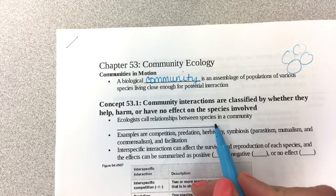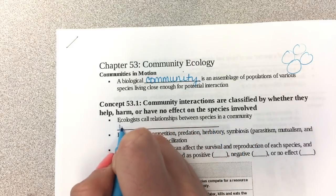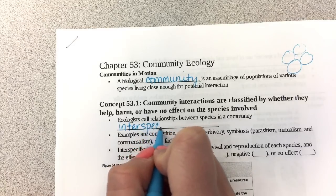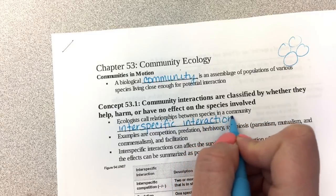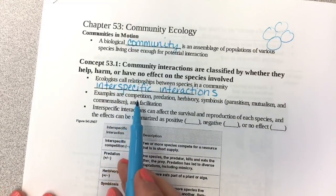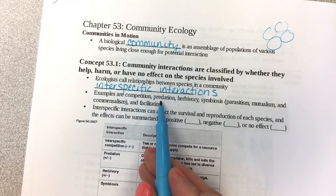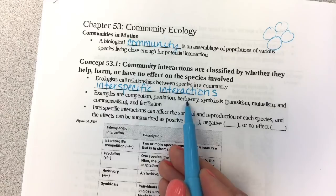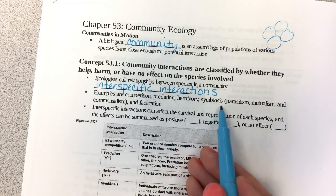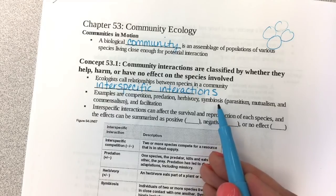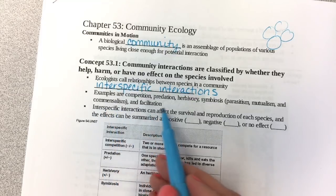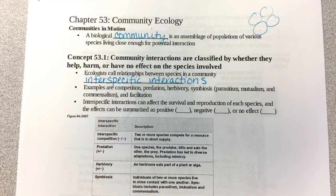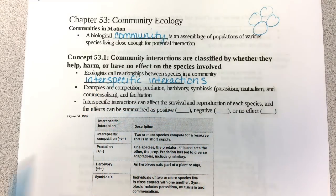Ecologists call relationships between species in the community interspecific interactions. Examples of those are competition between organisms, predation where the predator hunts the prey, herbivory which means herbivores eating plants, and symbiosis which is organisms living in close relationship with one another. We'll look at parasitism, mutualism, commensalism, and facilitation. All these interactions can affect the survival and reproduction of each species.